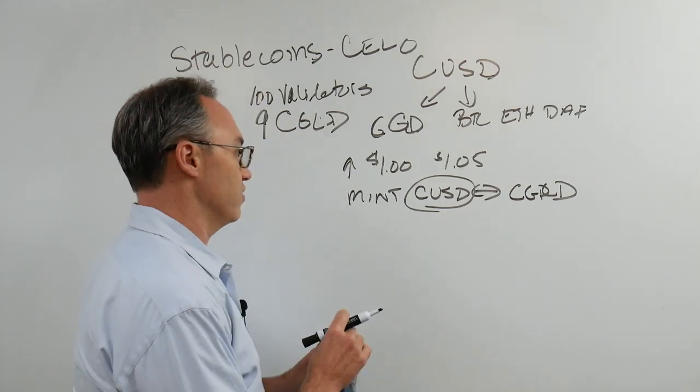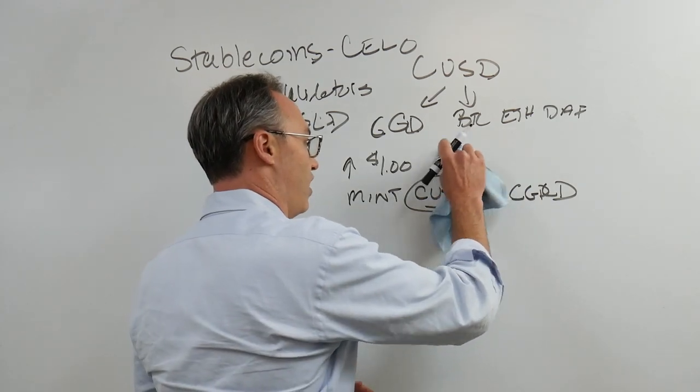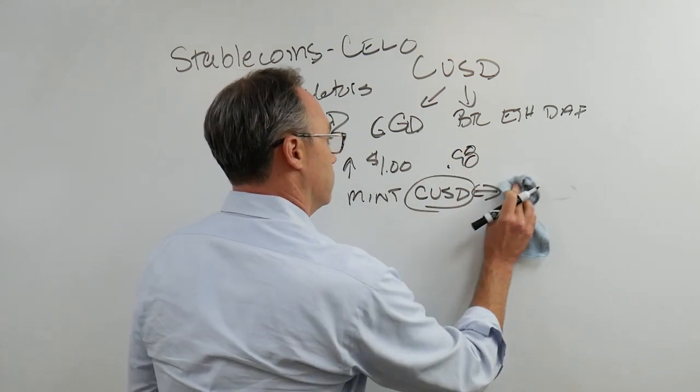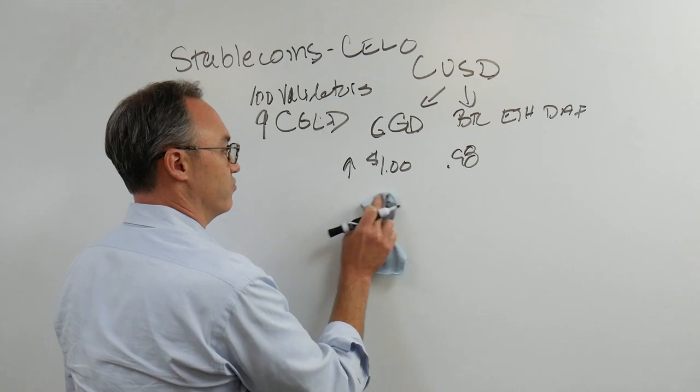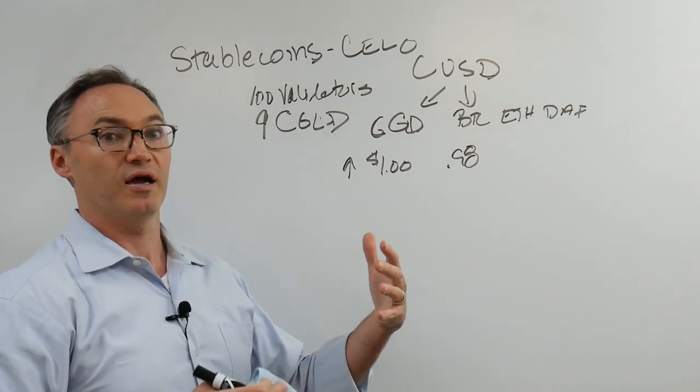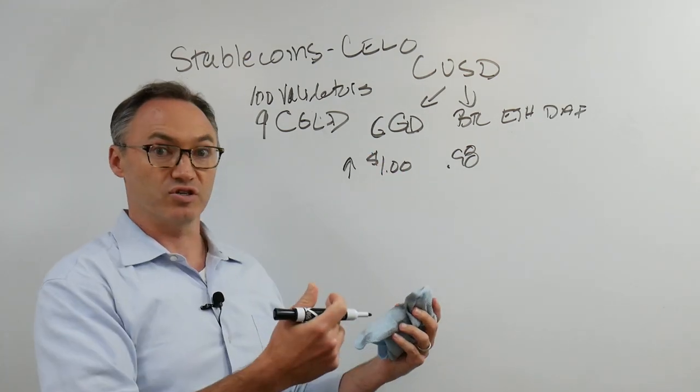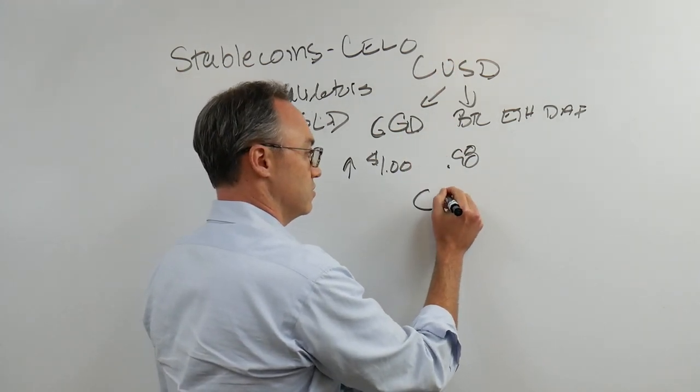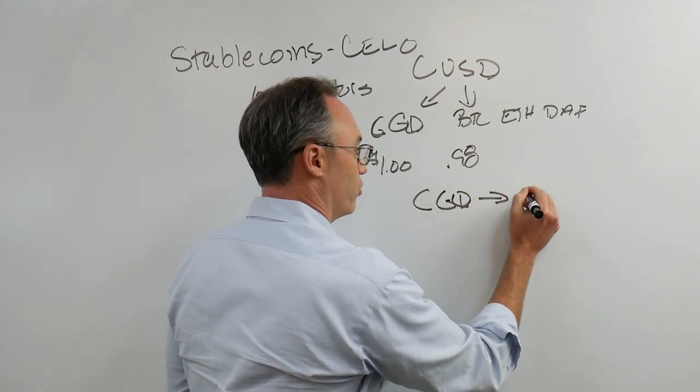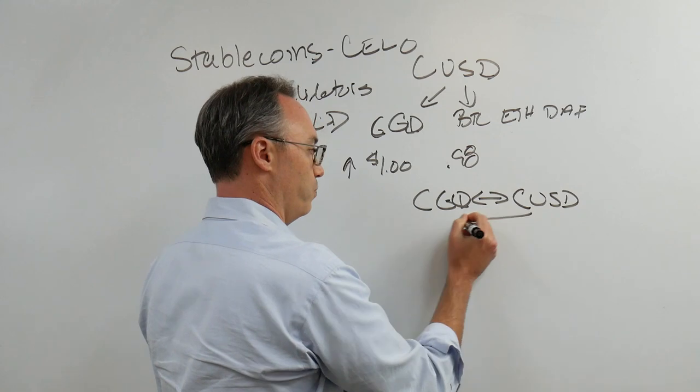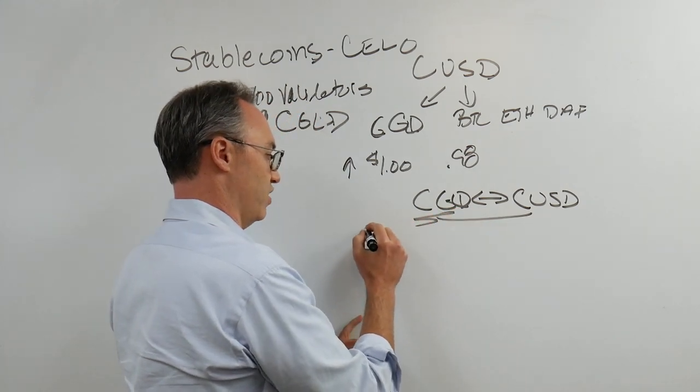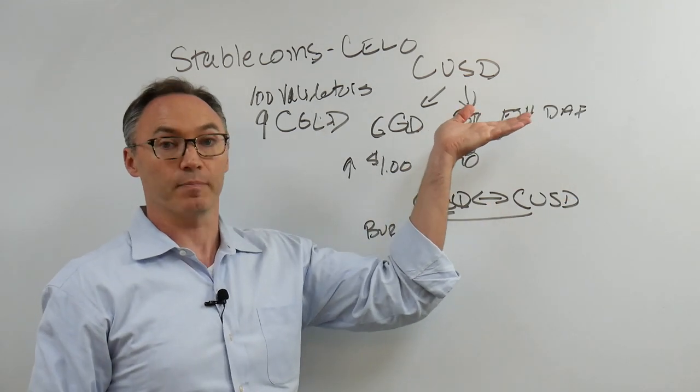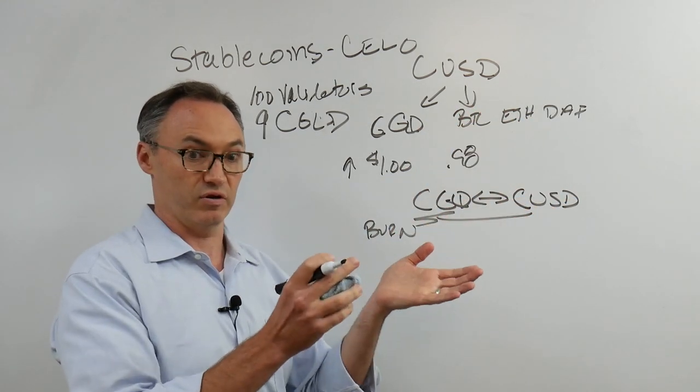What happens if the value goes down to, say, 98 cents? That's bad for the network. There's more supply than demand. The opposite is going to happen. The protocol is going to sell the Celo gold and buy CUSD. We're going to put that back in the reserve and burn it when it comes in. Less supply is going to drive the price back up to a dollar.